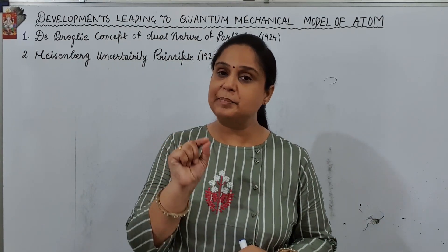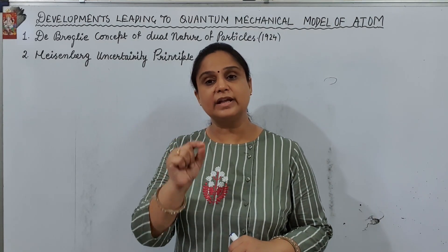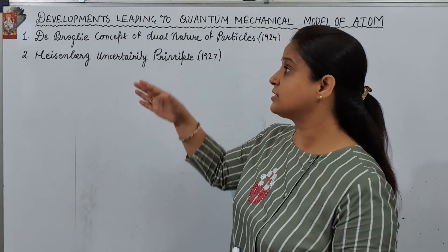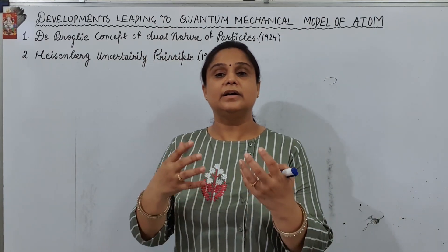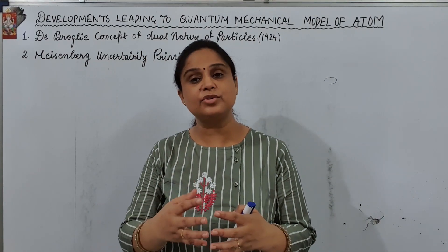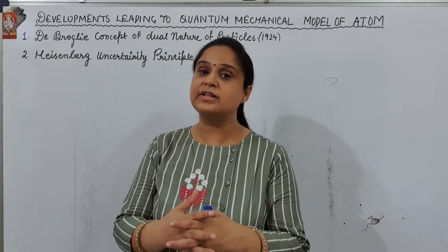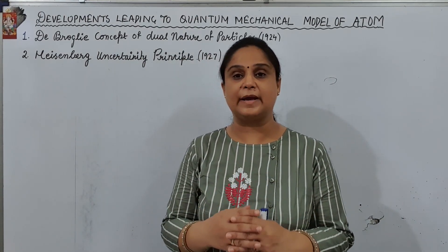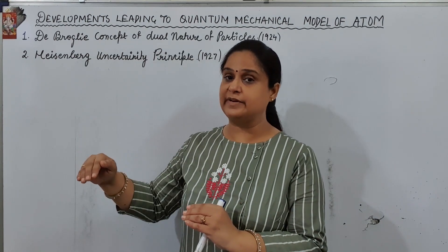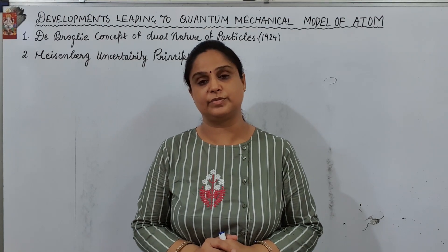The second flaw was that it completely considers the electron as a particle. Although it was becoming clear that electrons, just like light, also have a wave nature. So these were the two major concepts which led us to the new development of the model, ignoring Bohr's model.